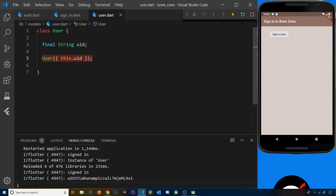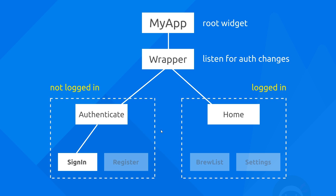The next thing we need to do is listen for when a user signs in so we can react and show the correct content. Currently we sign in in the sign-in widget, Firebase sends back a Firebase user, we turn it into our custom user, and then we just print it to the console. What we really want to do is listen for auth changes — when a user logs in or logs out — and show the appropriate side of the widget tree. To achieve this we'll be using something called a stream, which we'll discuss in the next lesson.